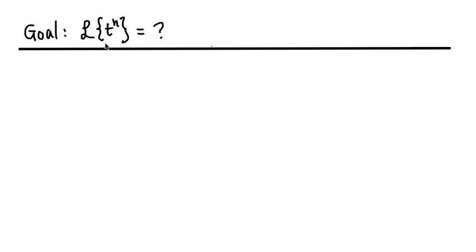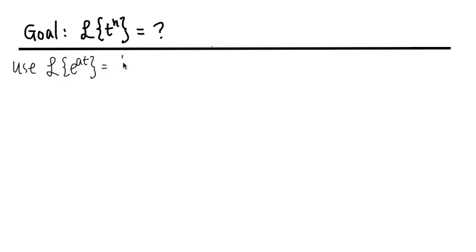We are going to figure out what the Laplace transform of t to the n power is, and this is how we are going to do it. We are going to use the fact that the Laplace of e to the at power is the same as 1 over s minus a, and we must make sure that s is greater than a in order for this to work.